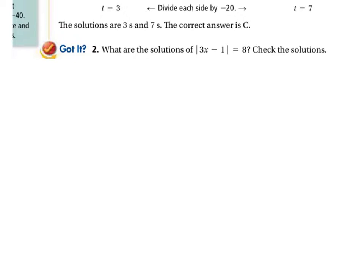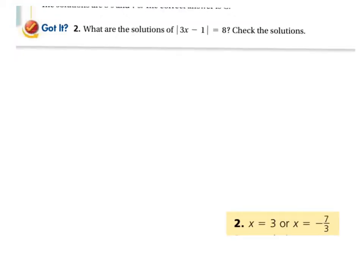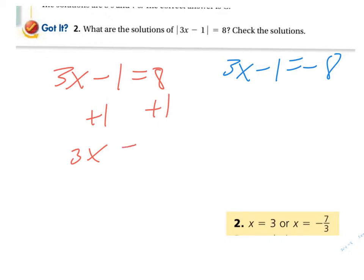What is the solution of the absolute value of 3x minus 1 equals 8? So to solve that, again, we're going to set up two equations. 3x minus 1 equals 8. And 3x minus 1 equals negative 8. The solution is going to be very similar, right? Add your 1. So 3x to both sides, by the way. 3x equals 9. Divide the 3, and x equals 3.